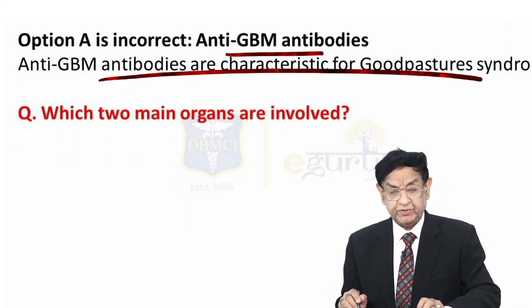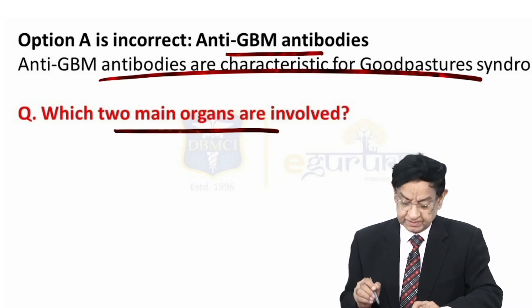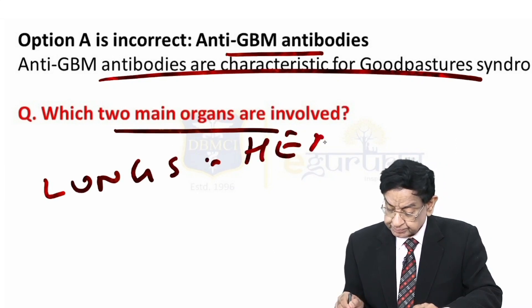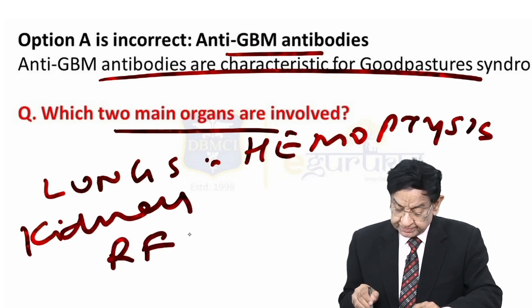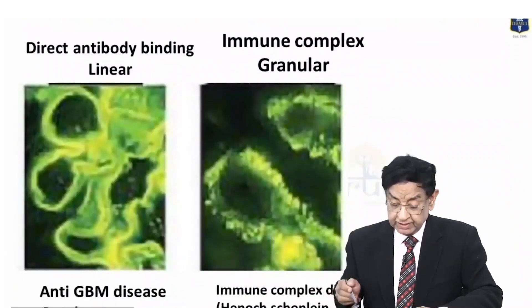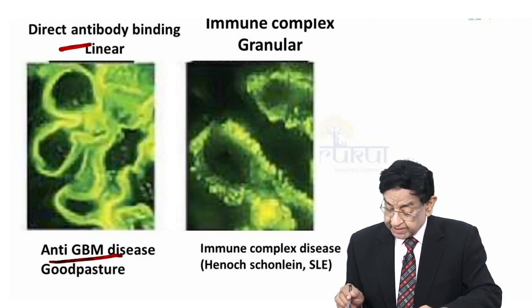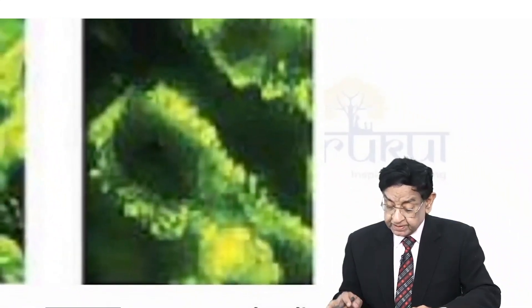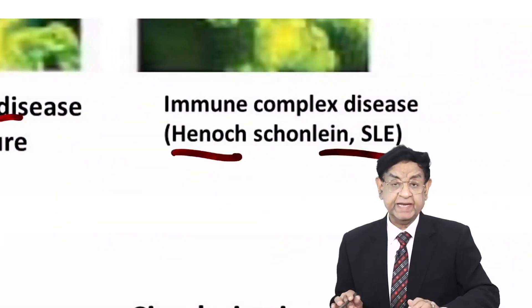I have a simple question for you: in Goodpasture syndrome, two main organs are involved. The answer is lungs, which can lead to hemoptysis, and kidneys, which can lead to renal failure. Now look at this — beautiful immunofluorescence. Anti-GBM shows linear deposition. Immune complex gives granular deposition, which we see in Henoch-Schönlein purpura and SLE. Linear deposition is seen in direct antibody binding, and granular deposition is seen in immune complex disease like Henoch-Schönlein purpura and SLE.